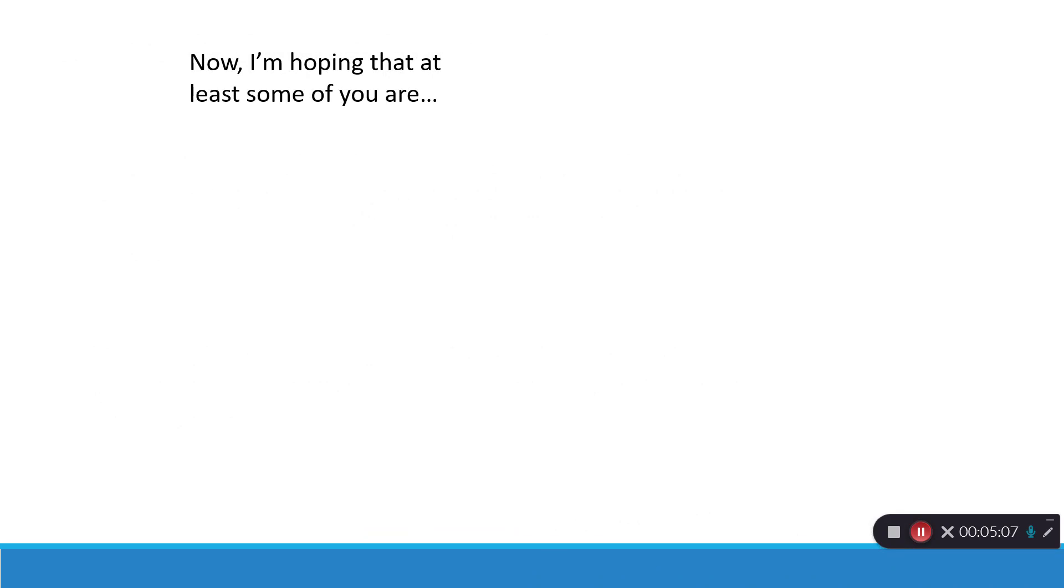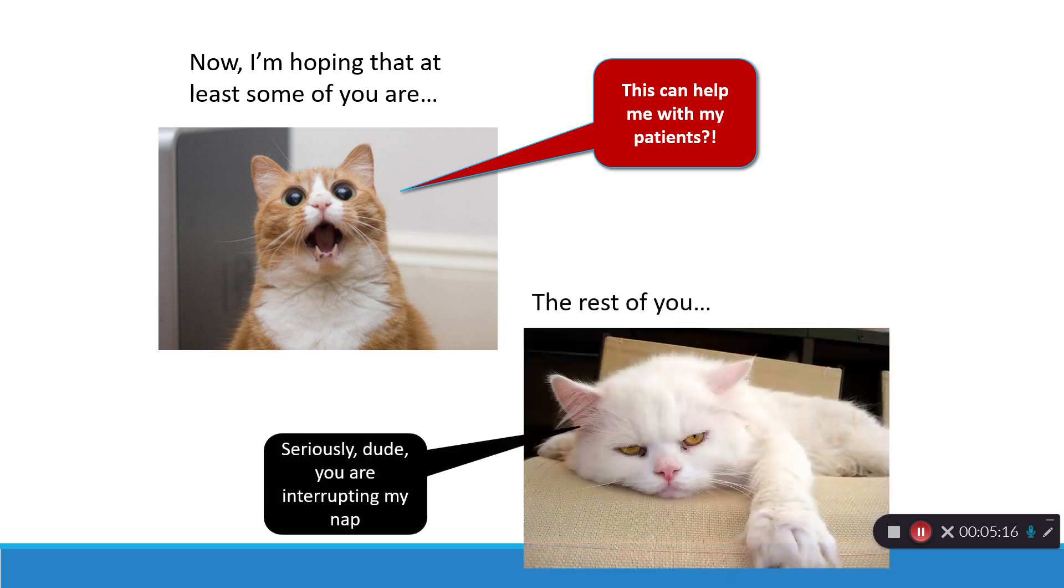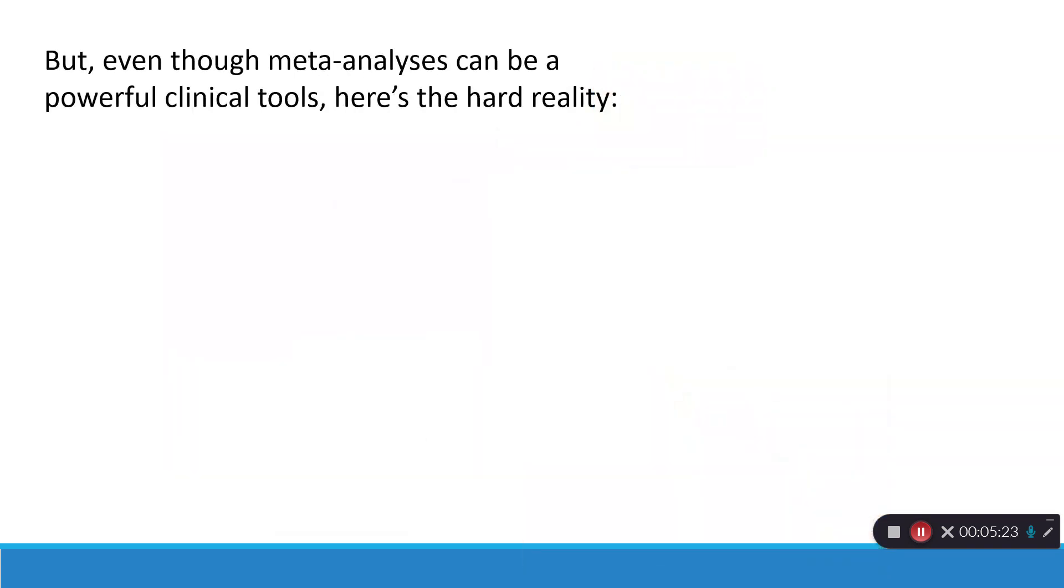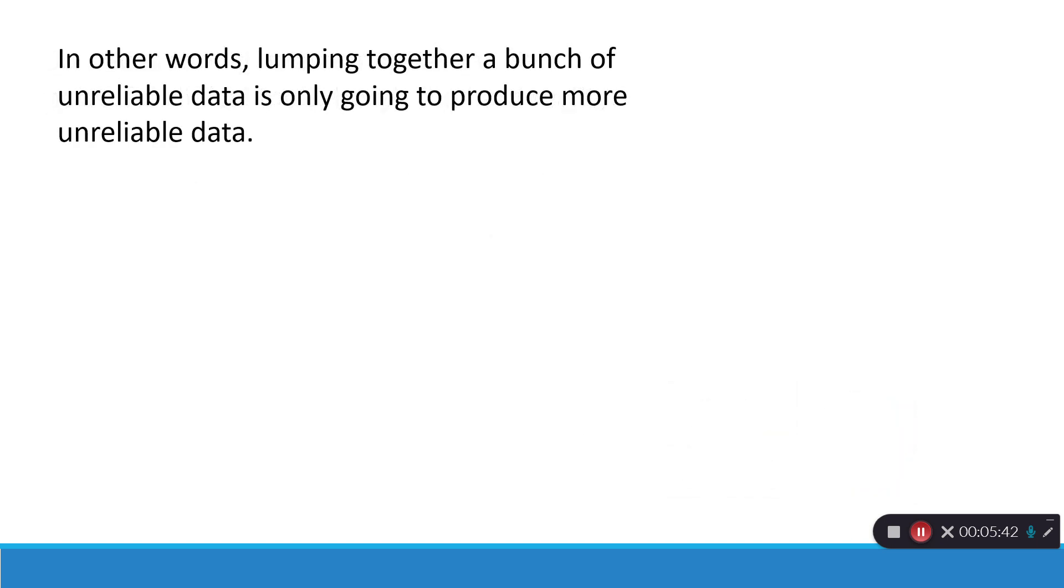Now, I'm hoping that at least some of you who are watching this are going to be like, wow, the light bulb went on, this is very cool stuff. And for the rest of you, you could go watch a different video or something like that. But even though meta-analyses can be powerful clinical and policy tools, here's the hard reality. The numbers are only as reliable as the research that went into them. Basically, if you've got junk coming in, you've got junk coming out. Can we trust those numbers? In other words, lumping together a bunch of unreliable data is only going to produce more unreliable data. But how can we tell how reliable a particular research article is?